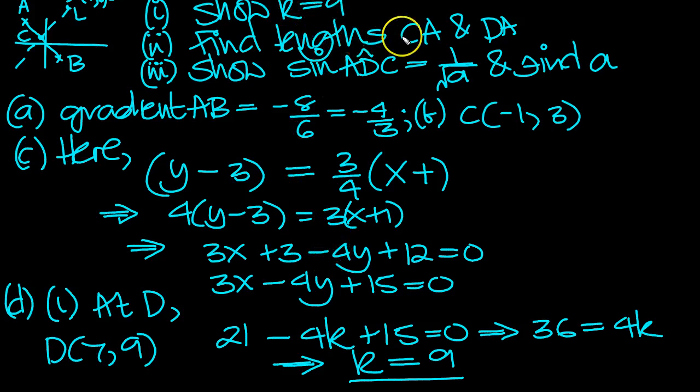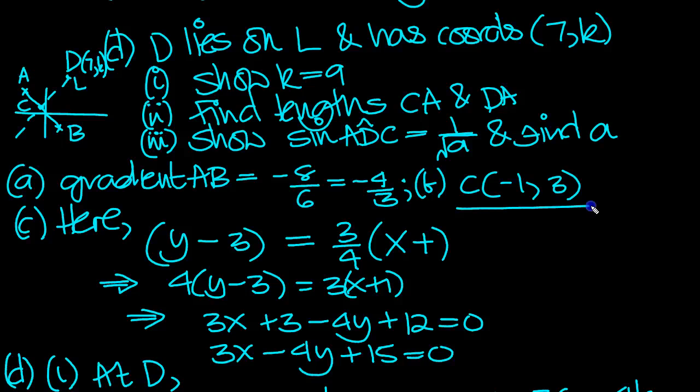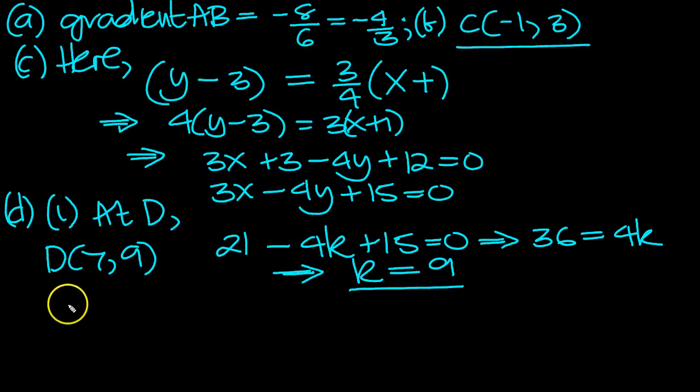So now it says find the lengths CA and DA. So C has this coordinate here, A has coordinate (-4, 7), and D has the coordinate (7, 9).